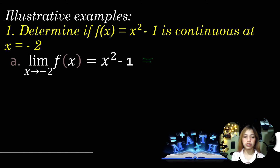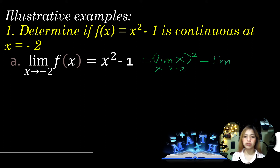First is the limit of x as x approaches -2. Second is the power theorem, which should be raised to 2. Third is the subtraction theorem. Then, applying the limit laws for the constant term as x approaches -2.